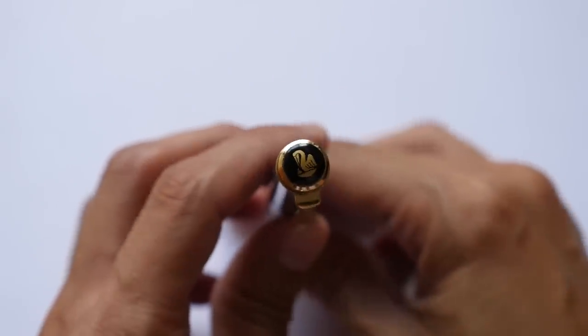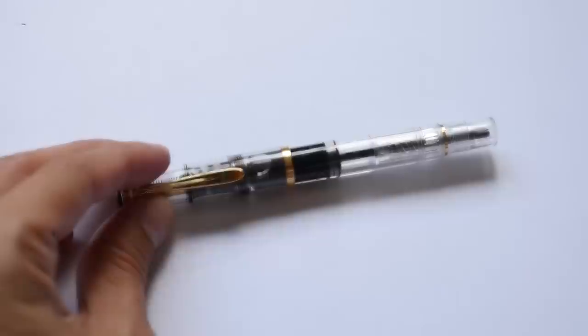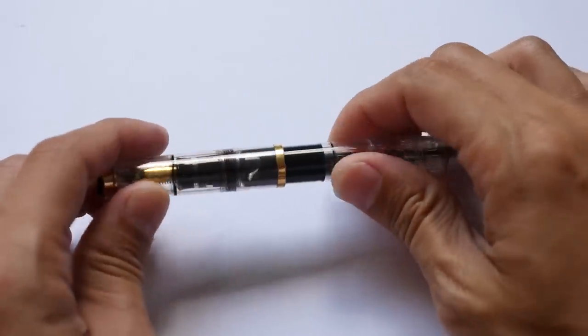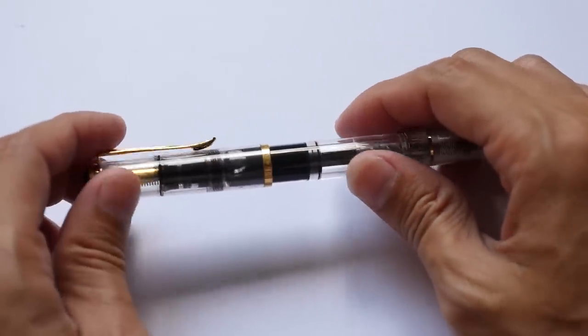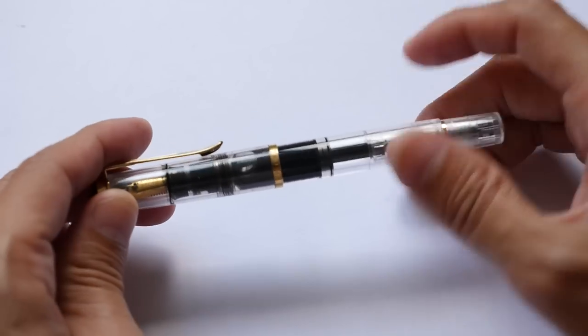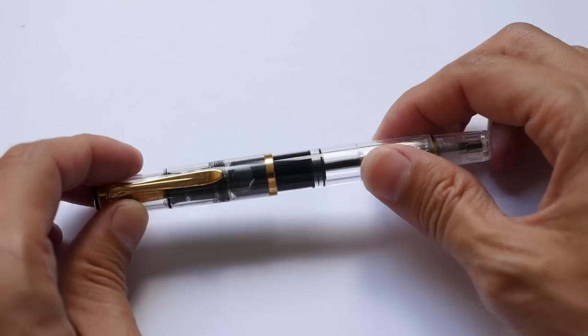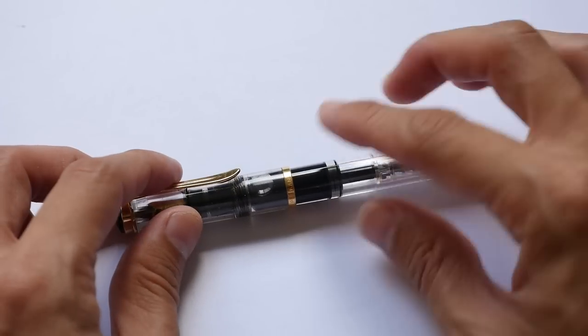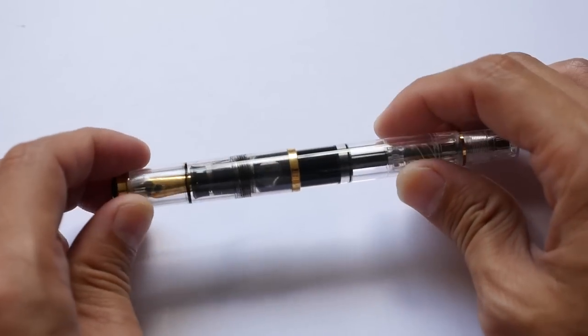That's the Pelikan logo. The body comes in different colors. The one I bought is the demonstrator version, which has a clear body so you can see how much ink is left inside.